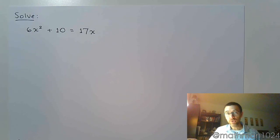We continue our discussion of using the zero factor theorem with this example: 6x² + 10 = 17x. Now to use the zero factor theorem, the first thing we have to do is to get everything on one side so that we have zero on the other side.